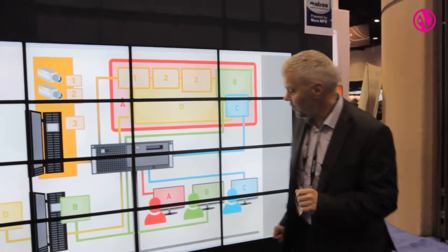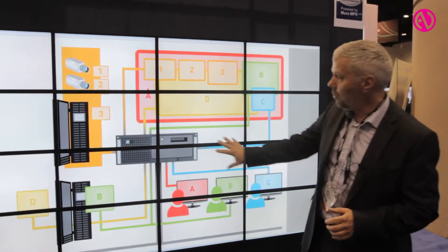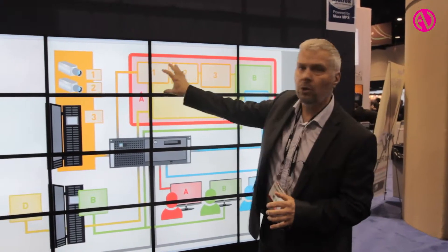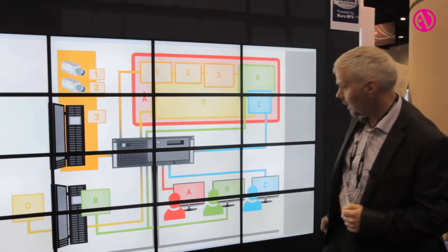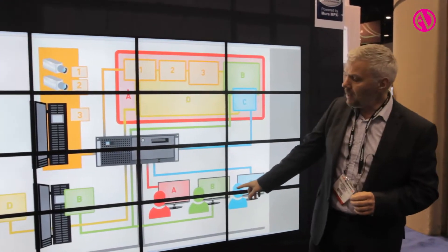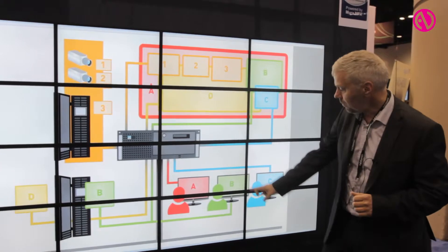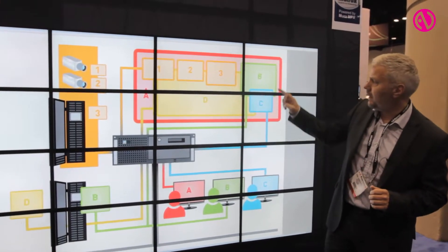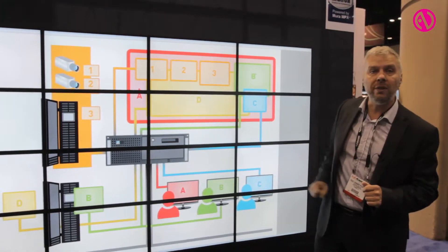So in a nutshell, controller A is able to control everything that's on the video wall. He's the one who controls where windows are supposed to be placed. Controller B is a bit more specialized — he works on a specialized computer that's in the network, and at any point of time he can decide to send the content of his desktop to the video wall.